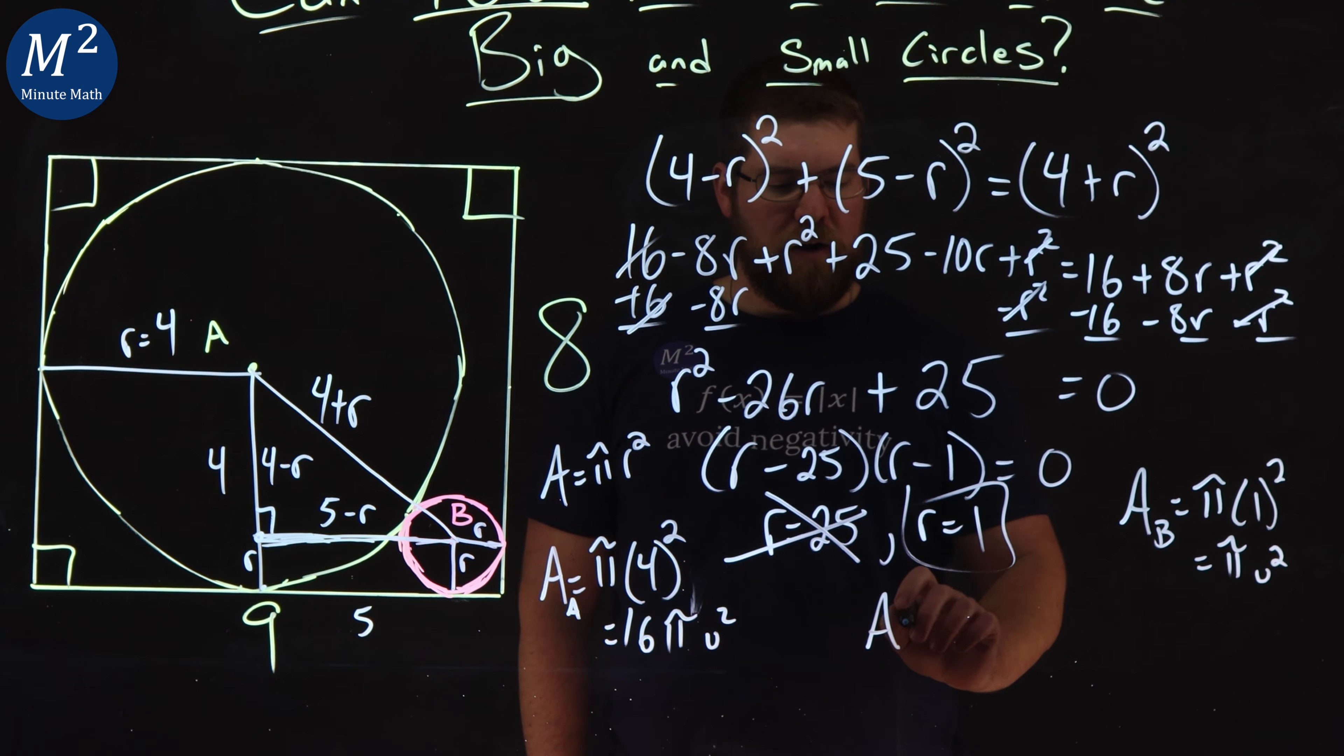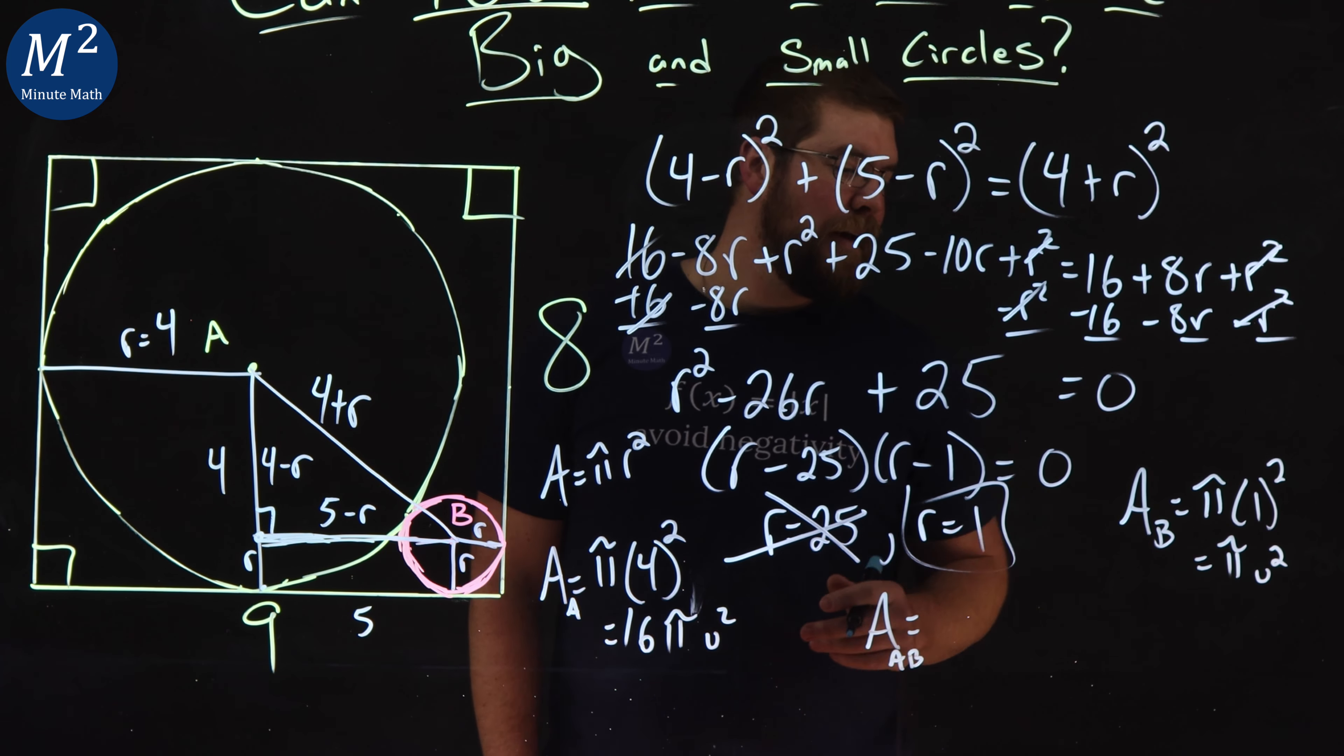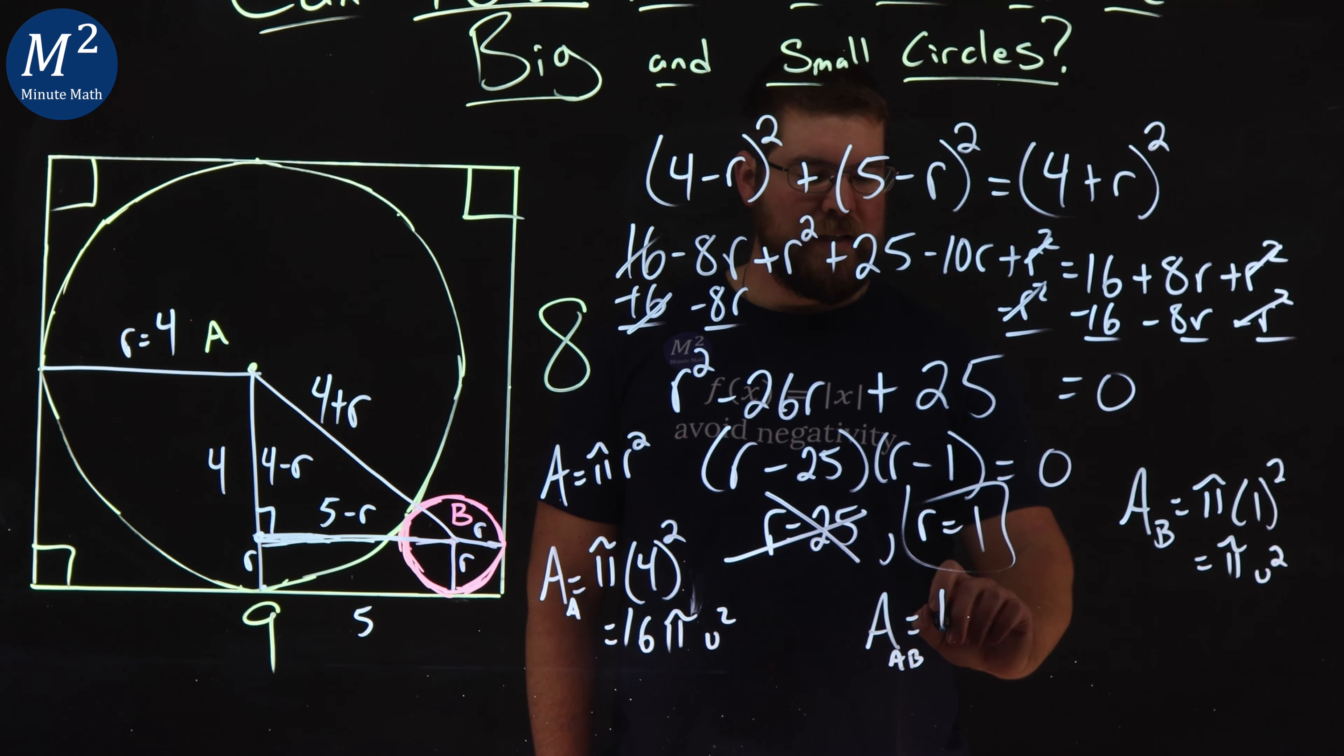And so the total area of both circles, A and B, is equal to, we add them up, 17 pi units squared.